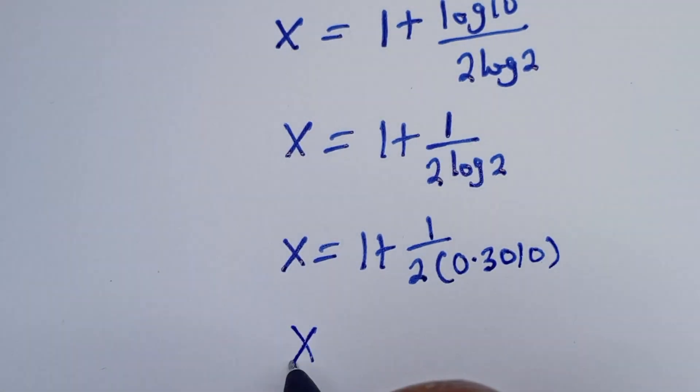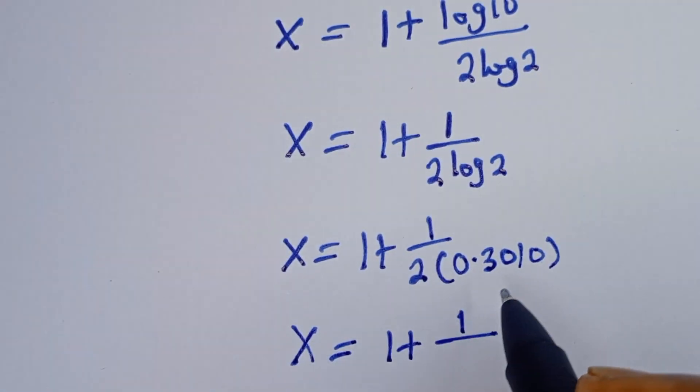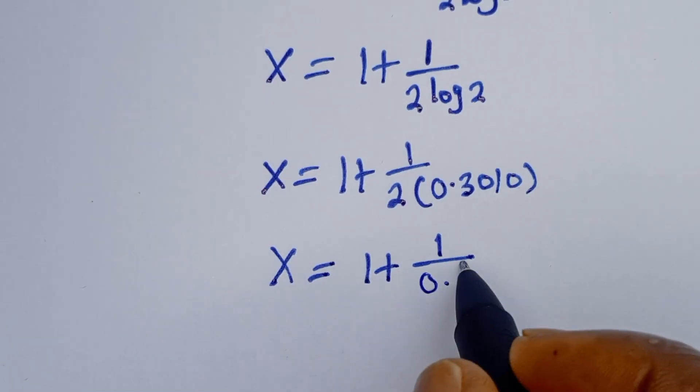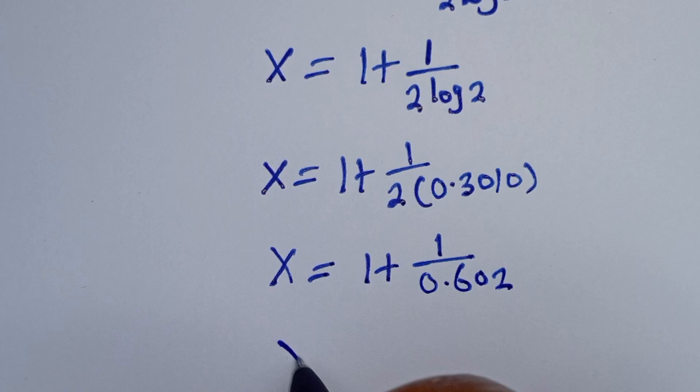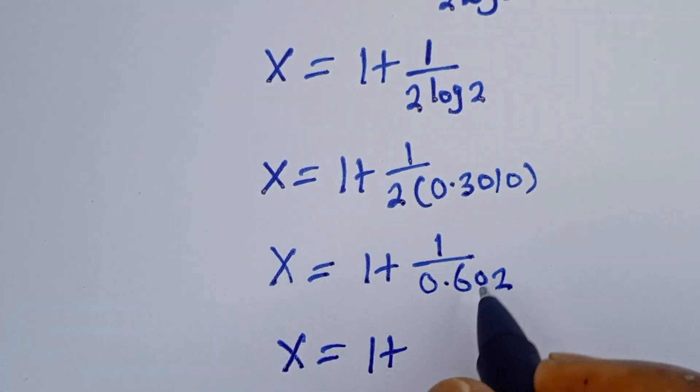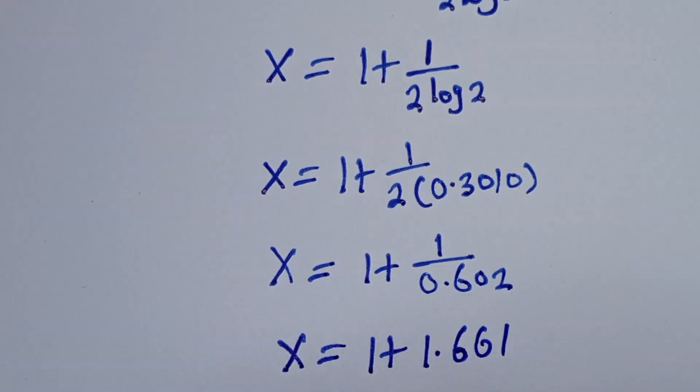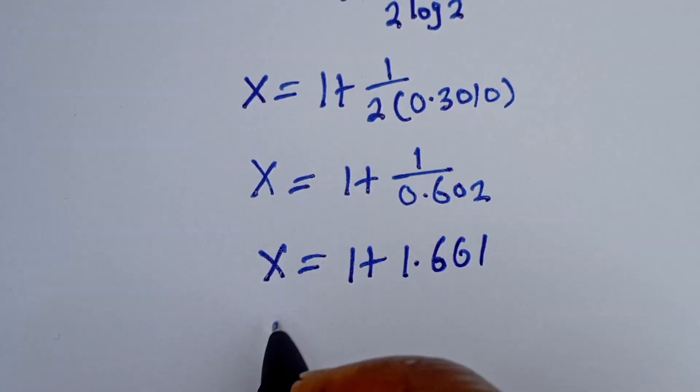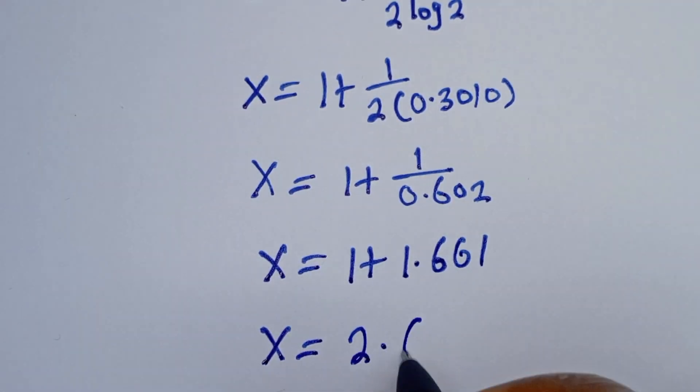Then x is equal to 1 plus 1 divided by, if you multiply 2 by this, we have 0.602. Then x is equal to 1 plus 1 divided by 0.602, which gives us 1.661. Then x is equal to 1 plus 1.661, which is 2.66.